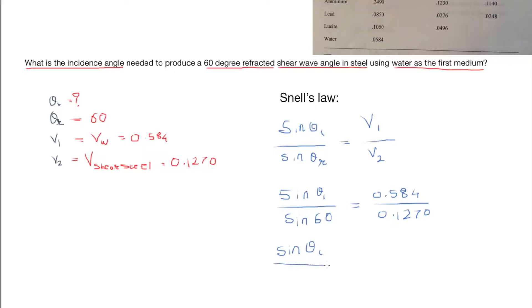So sine of incident angle over the value of sine 60, which is 0.866, and the equation on the right-hand side, 0.0584 over 0.1270, gives us 0.459. So sine of incident angle is 0.459 times 0.866.